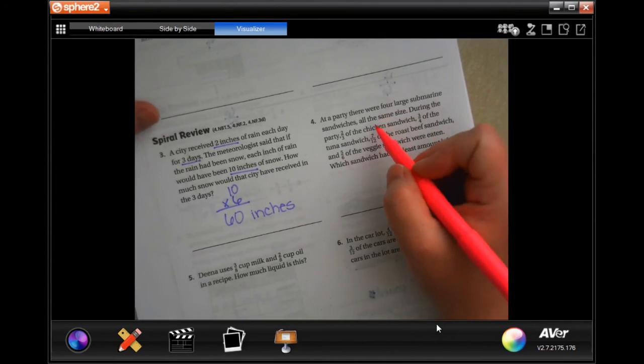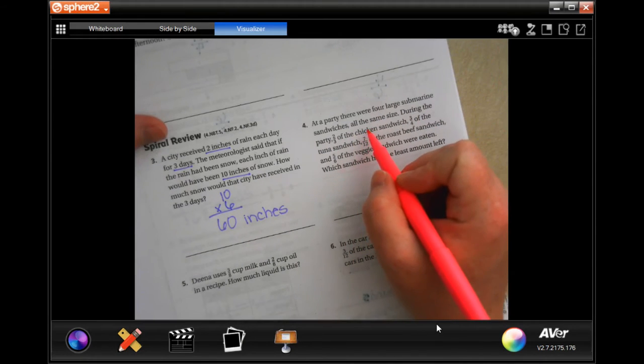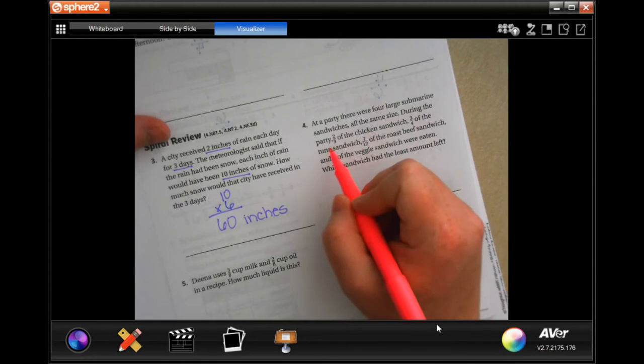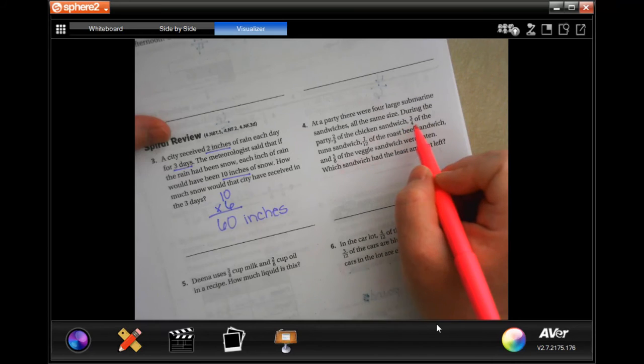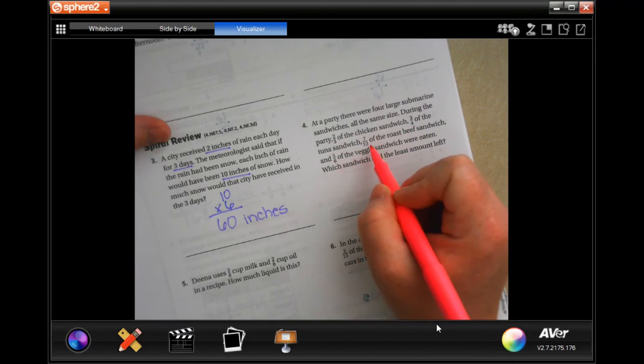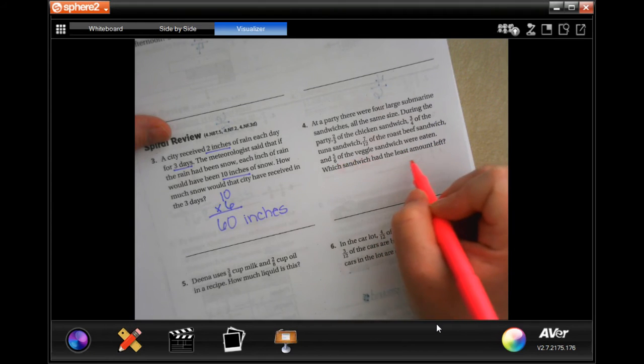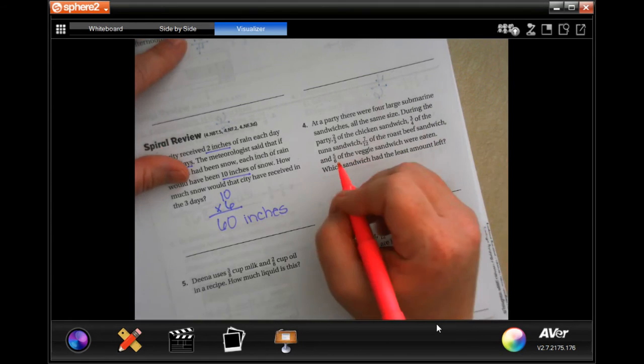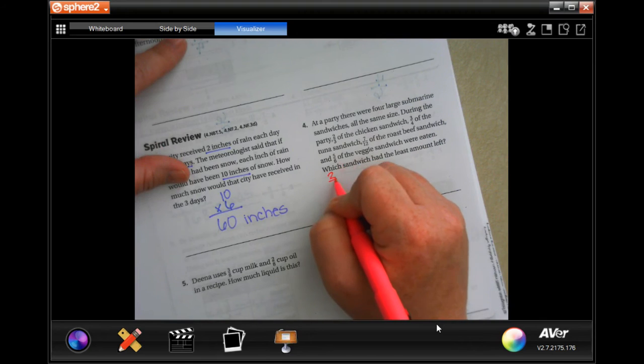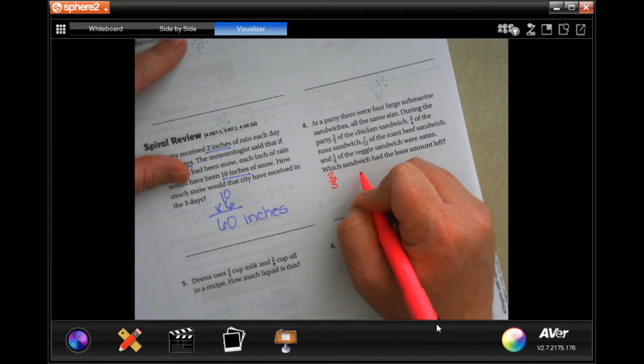At a party, there were 4 large submarine sandwiches, all the same size. During the party, 2/3 of the chicken sandwich and 3/4 of the tuna sandwich, 7/12 of the roast beef sandwich, and 5/6 of the veggie sandwich were all eaten. Which sandwich had the least amount left? So, let's write it right here really fast so that we can get that.